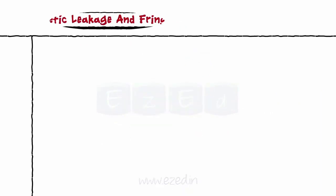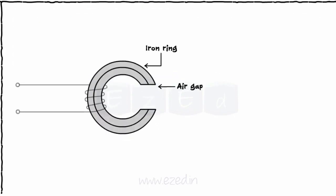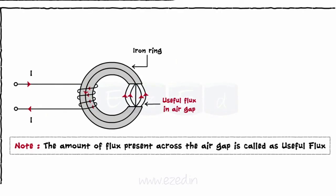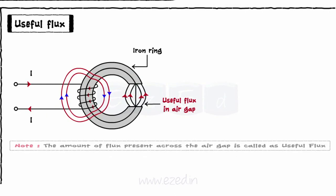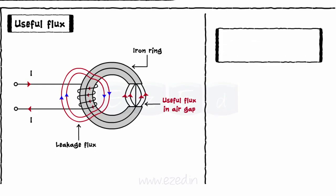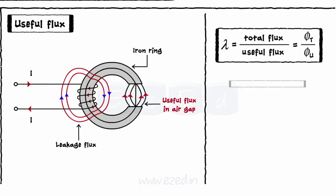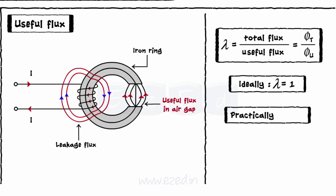Let's study the concept of magnetic leakage and fringing. It is expected that whenever the flux is produced by the magnetizing coil, it should complete its path through the air gap. But practically, all the flux never appears across the air gap, as some of the flux completes its path through the medium in which the coil and the magnetic circuit is placed. This is called leakage flux. The leakage coefficient lambda is given as the ratio of total flux to the useful flux. Ideally, its value should always be 1, but practically it is always greater than 1.